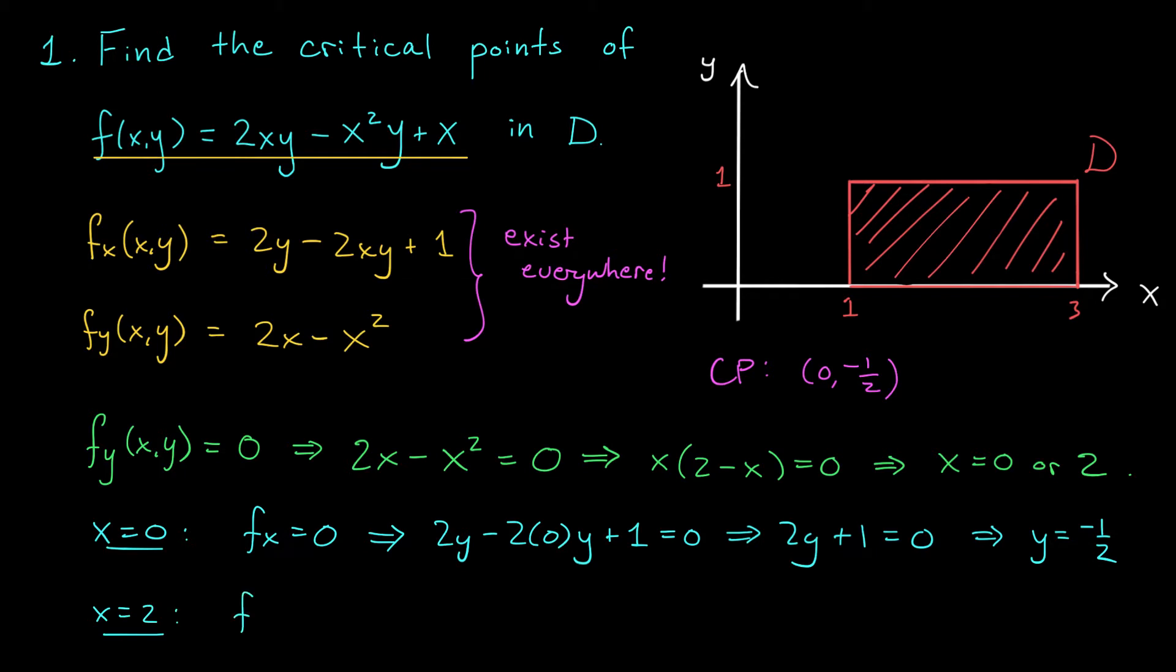What about when x equals 2? Well, this same equation is going to give us 2y - 2(2)y + 1 = 0, or equivalently, -2y + 1 = 0. Again, we can solve this to get y = 1/2. We have a second critical point (2, 1/2). But hold on just a second. One of these critical points doesn't need to be considered. The point (0, -1/2) is outside this region D. We can ignore it from here on. The point (2, 1/2), however, is this point right here. It is a candidate for a global max or min.